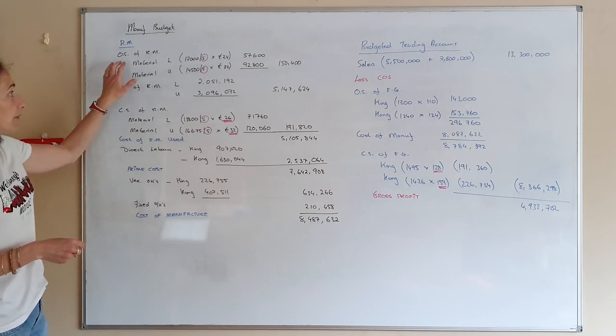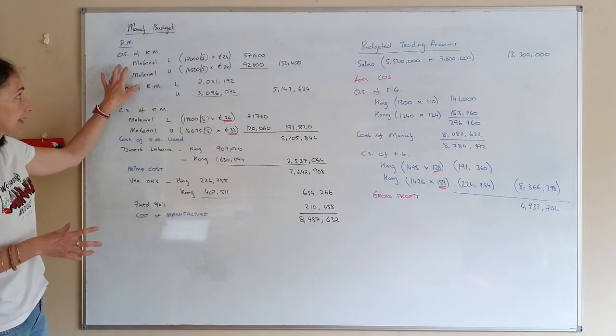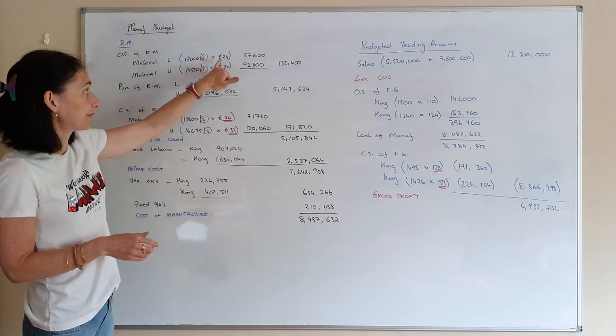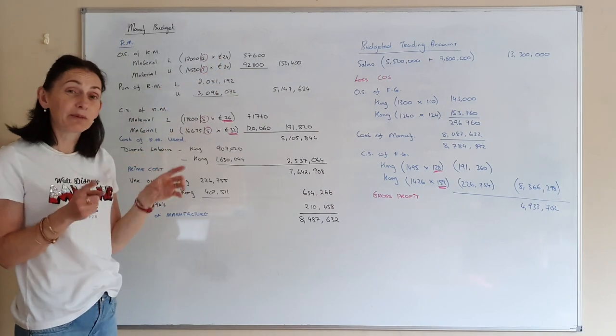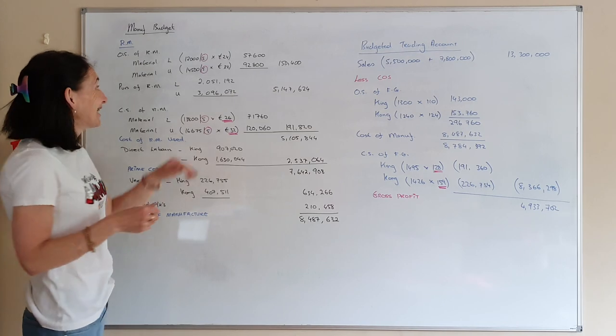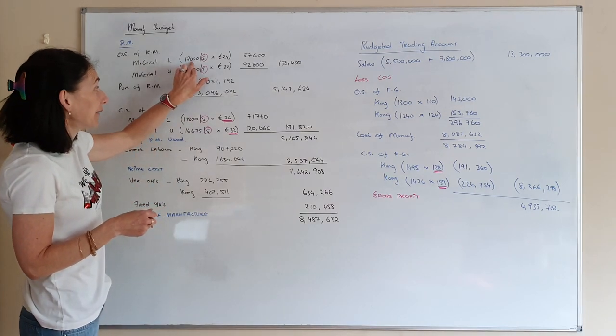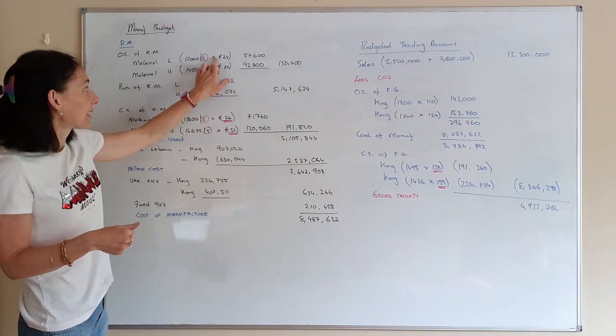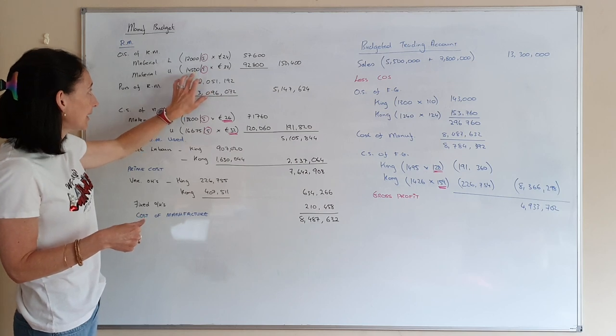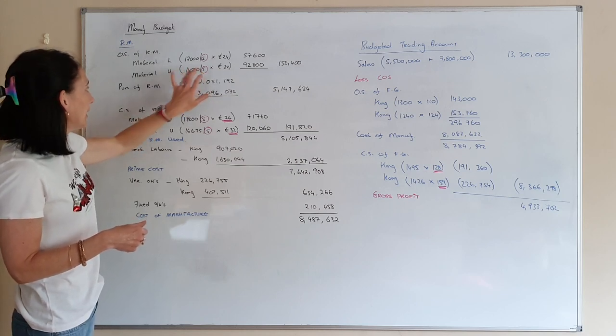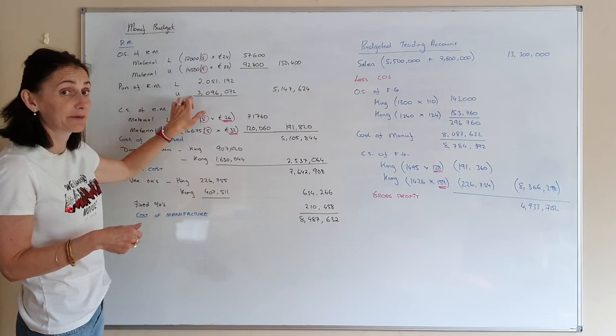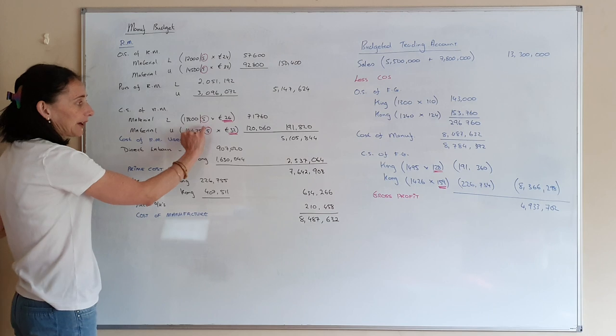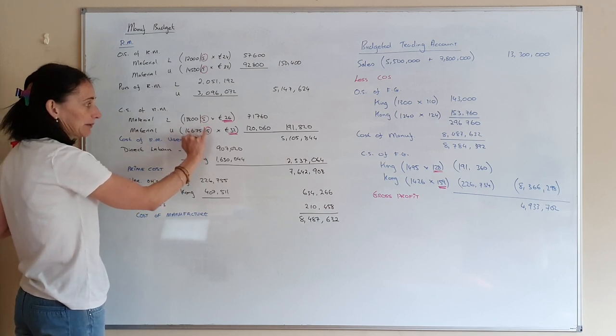Now, the opening stock of raw materials, I just want you to be careful of this. They give you all this information. They tell you the materials that you had cost 24 and cost 32. But remember, they're bought in five gram bags. So this is the amount of grams that you have. Remember, you must divide by five to see how many bags you need at 24 euro. And the same with material U. Your purchase of raw materials obviously came from your raw materials purchase budget. And your closing stock, again, I've circled the five euro for you to remember that you're buying them in bags of five grams.